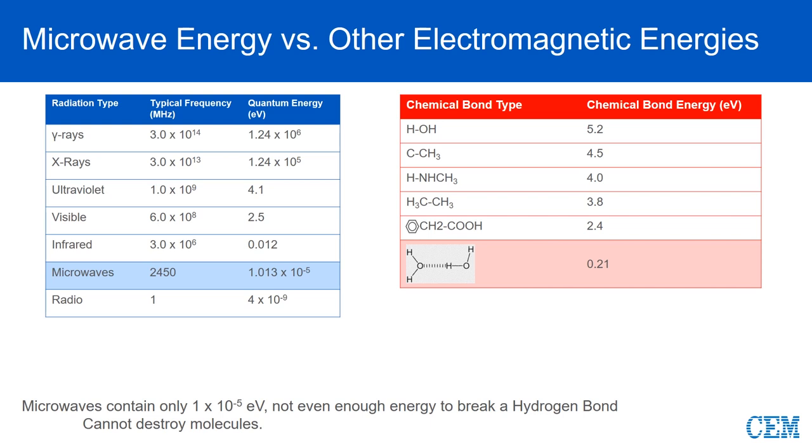The blue table shows the energy contained in various sources of electromagnetic radiation. The red table shows different bond types and the energy needed to break those bonds. Microwaves produce only 1 × 10^-5 electron volts, not even enough energy to break a hydrogen bond in water. Microwaves will not and cannot destroy molecules.